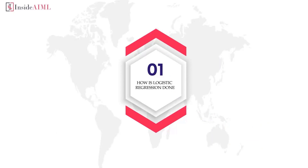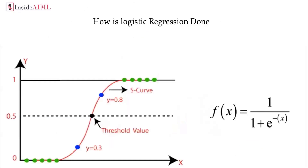The very first question is: how is logistic regression done? Logistic regression is a statistical model that in its basic form uses a logistic function, also known as the sigmoid function, to model a binary dependent variable. What logistic regression does is take many independent variables and then give you a probability of either yes or no, using the sigmoid function.